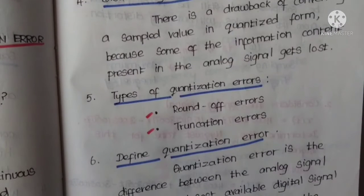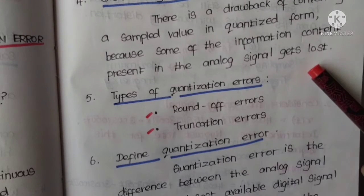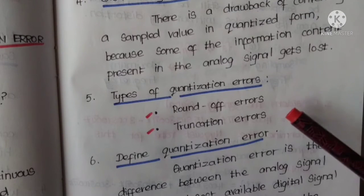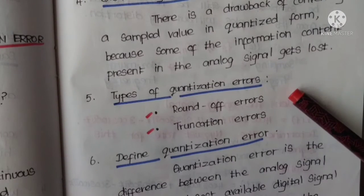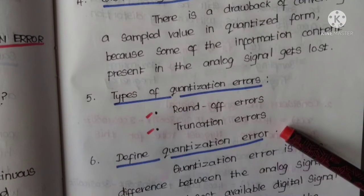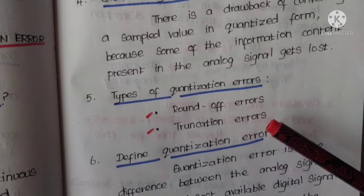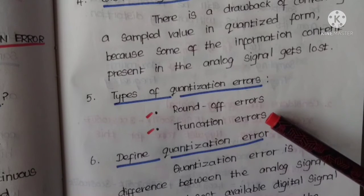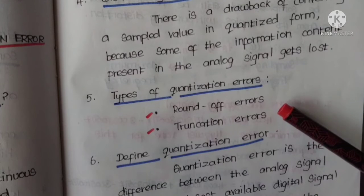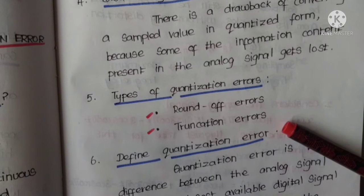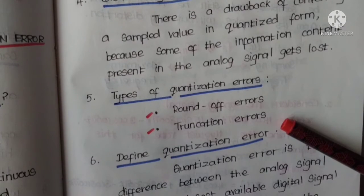Now, types of quantization error. This disadvantage or drawback causes error. There are two types of errors: round-off errors and truncation errors. As we see, there are two types of quantization methods: rounding and truncation. Rounding produces round-off errors and truncation produces truncation errors.